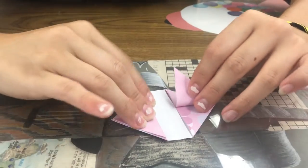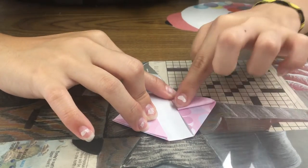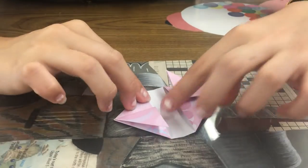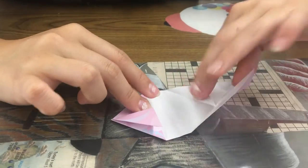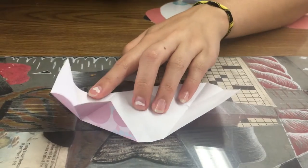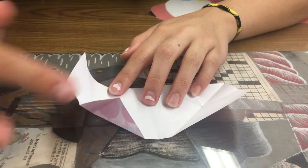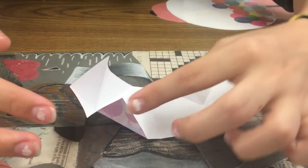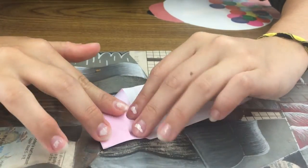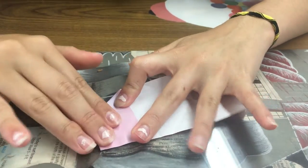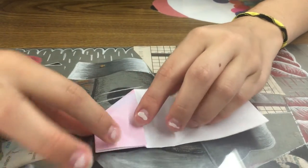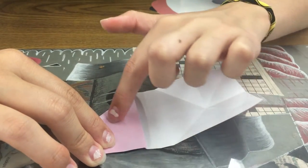So now we're going to unfold everything we just did and notice how this side makes an indent. So you're just going to take that indent and roll with it, hold it down so you get this nice looking trapezoid.